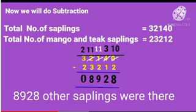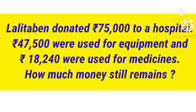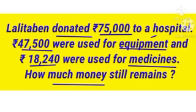Now see the next question. Lalitha Bain donated Rs. 75,000 to a hospital. Rs. 47,500 were used for equipment and Rs. 18,240 were used for medicines. How much money still remains? What is asked here? The amount that still remains. The amount used for equipment is Rs. 47,500 and Rs. 18,240 were used for medicines.